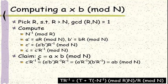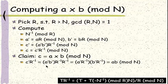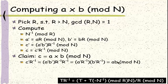After we do this, we return the value of c and claim this c is indeed the modular multiplication of a times b mod n. To see this, we start from the definition of c and plug in the definition of c prime. So what we get is c prime times r inverse equal to a prime times b prime times r inverse times another r inverse. Because multiplication is commutative, we pair up a prime with one of the r inverses to get a prime times r inverse, which is a by definition. Similarly, b prime times r inverse gives us b, which shows this is indeed the modular multiplication.